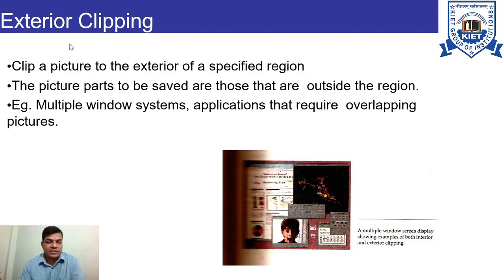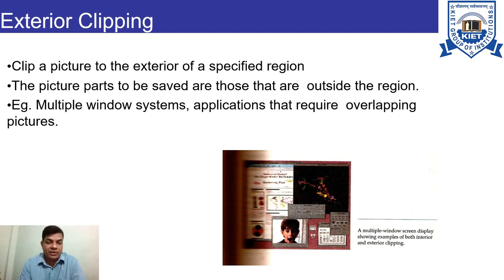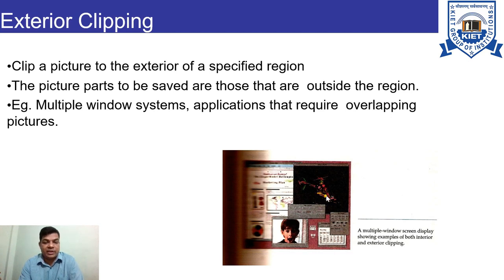Exterior clipping is the opposite of interior clipping. In exterior clipping, whatever portion is inside the window is not displayed, and the portion which is outside the window is kept for display. We clip a picture to the exterior of a specified region — the picture parts to be saved are those outside the region. For example, in a multiple window system, the window acts as a clipping window, and the portion outside this window is kept for display while the portion inside, shown in dark color, is not displayed.